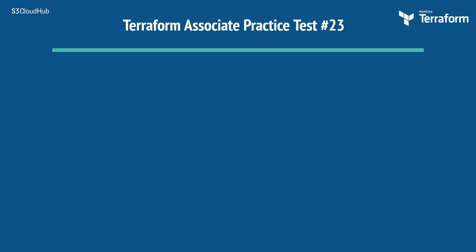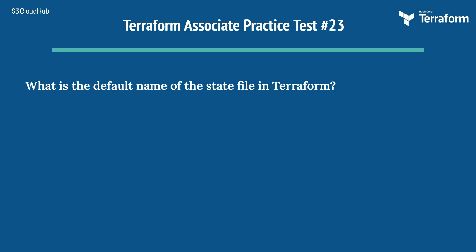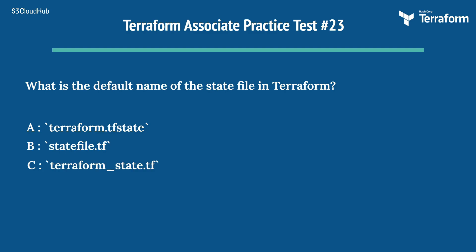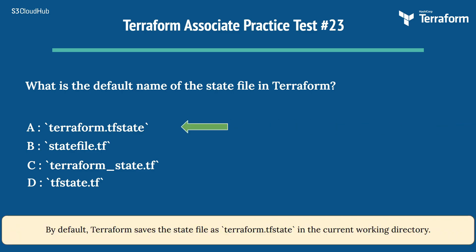Question 23: What is the default name of the state file in Terraform? Options: A) terraform.tfstate, B) statefile.tf, C) terraform_state.tf, D) tfstate.tf. The right answer is A) terraform.tfstate. By default, Terraform saves the state file as terraform.tfstate in the current working directory.